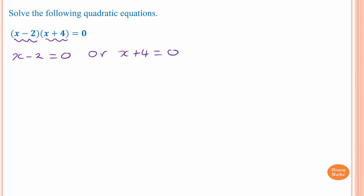Now we just solve these equations. For x minus two equals zero: two minus two is zero, so x equals two. Moving negative two to the other side gives positive two. For the second equation, moving positive four to the other side gives x equals negative four.